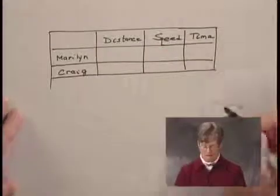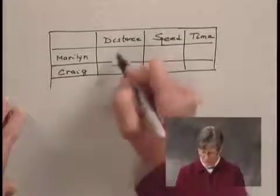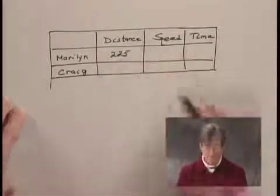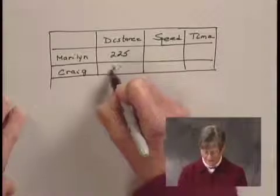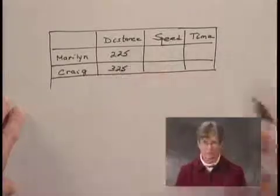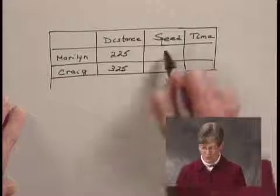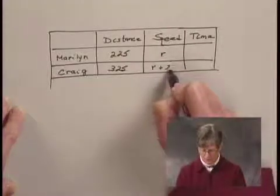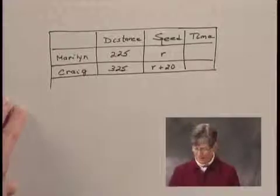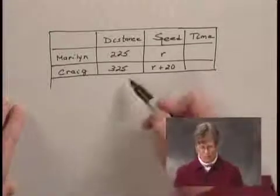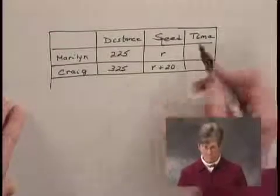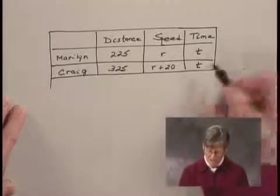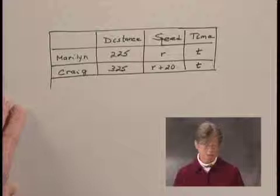Now, we're told that Marilyn travels 225 kilometers in the same time that Craig travels 325 kilometers. We just assigned the variable R to Marilyn's speed and R plus 20 to Craig's speed. And they do this traveling in the same amount of time, so we can represent each time by the letter T because the times are the same.